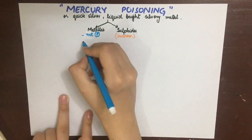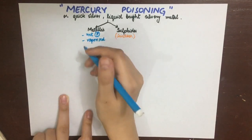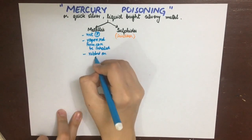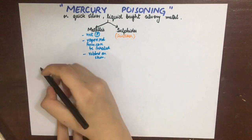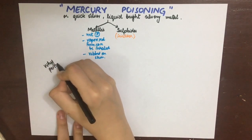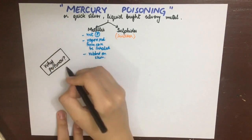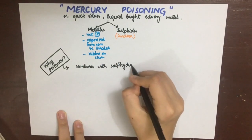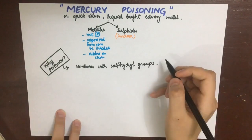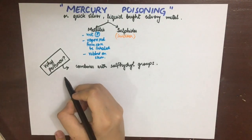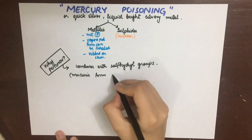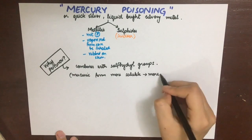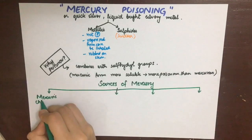Although mercury's vaporized form can be inhaled, swallowed, or rubbed onto skin. Mercury is poisonous because it combines with sulfhydryl groups of metabolic enzymes, thus interfering with metabolism. One thing to remember is that the mercuric form is more soluble and thus more poisonous than the mercurous form.